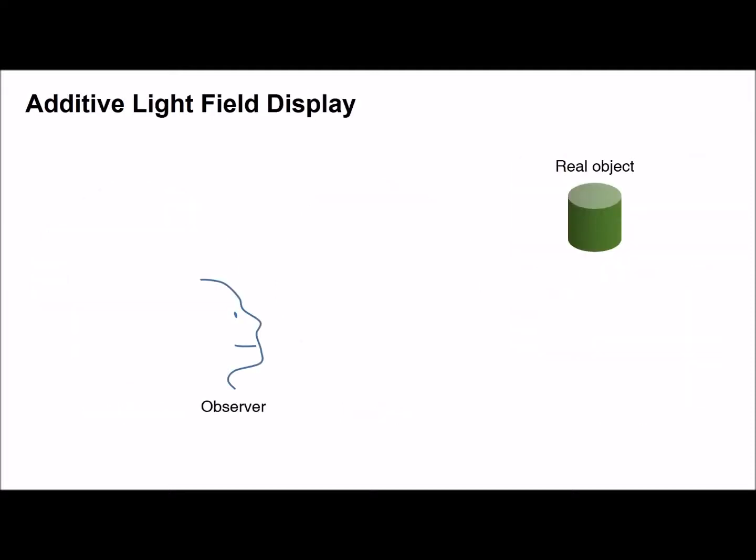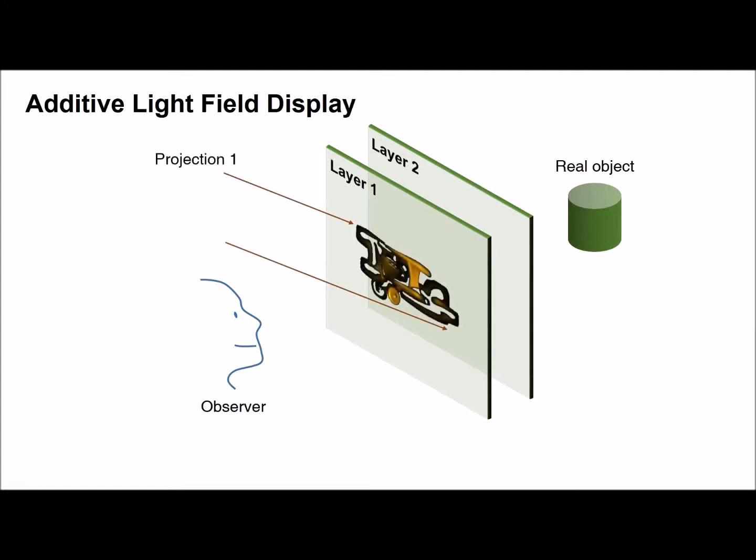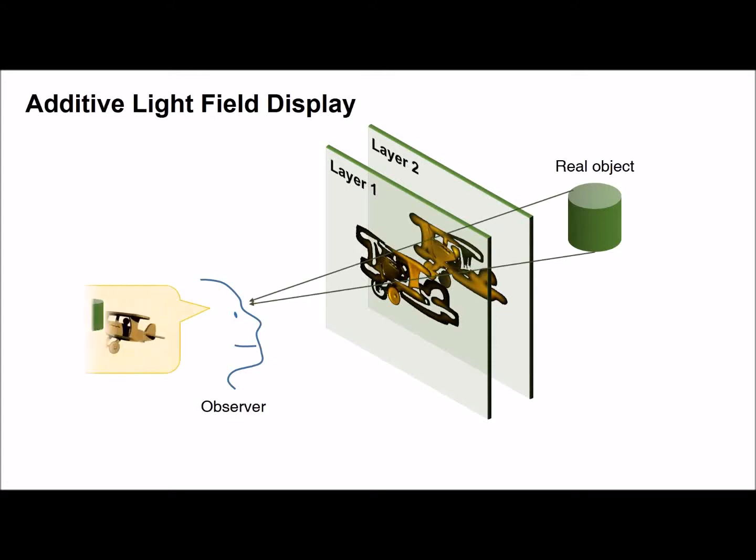As one of efforts for realization of AR, we propose the additive light field display. We utilize holographic optical elements as additive layers for compressive displays. Holographic optical elements have transparency, angular selectivity, and ability of wavelength multiplexing. This makes it feasible to design projection systems with multi-layered screens. The properties of holographic optical elements allow observers to see real objects beyond the display.